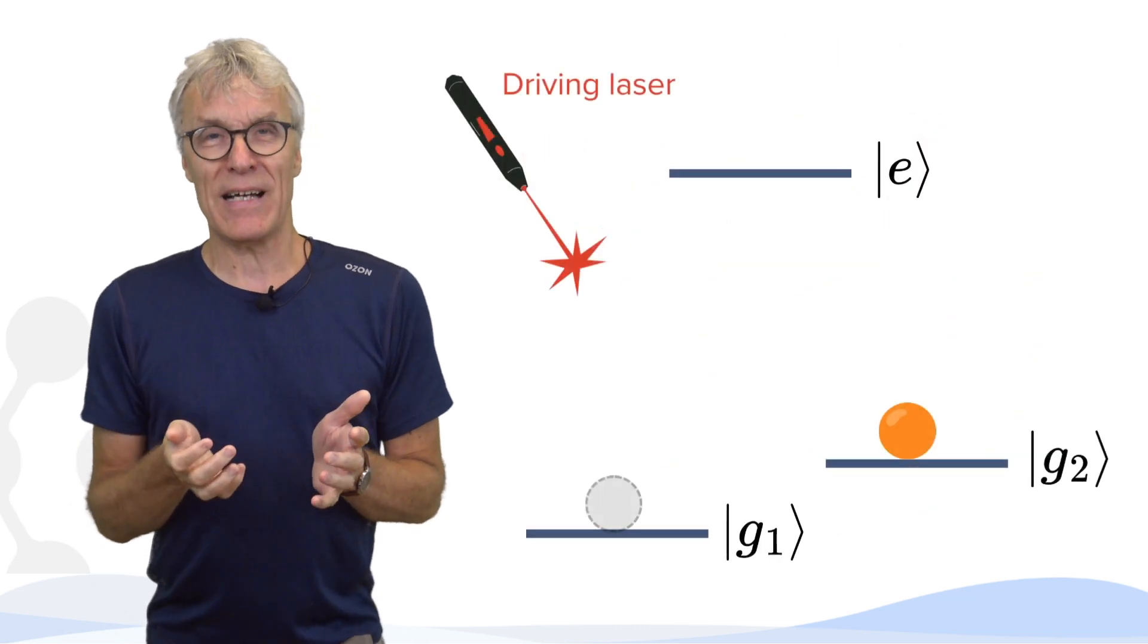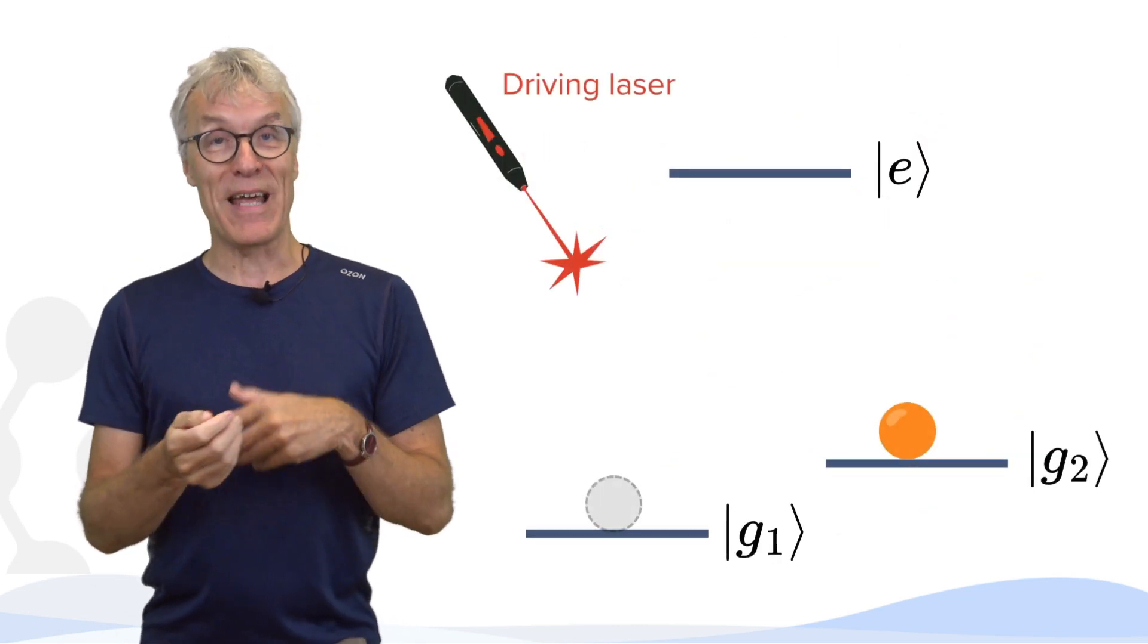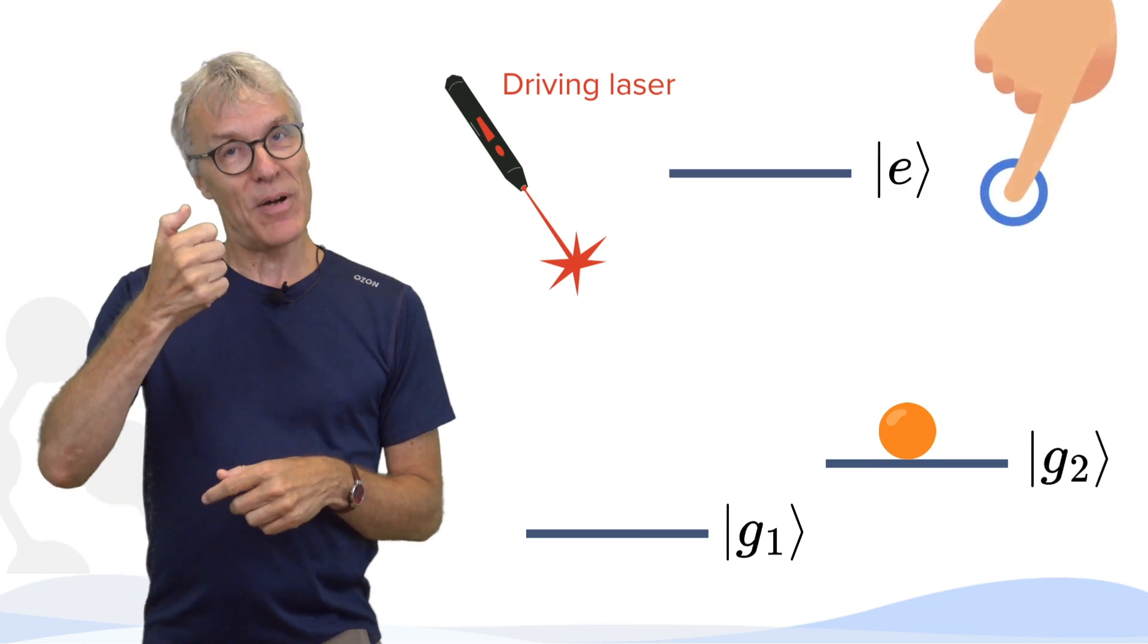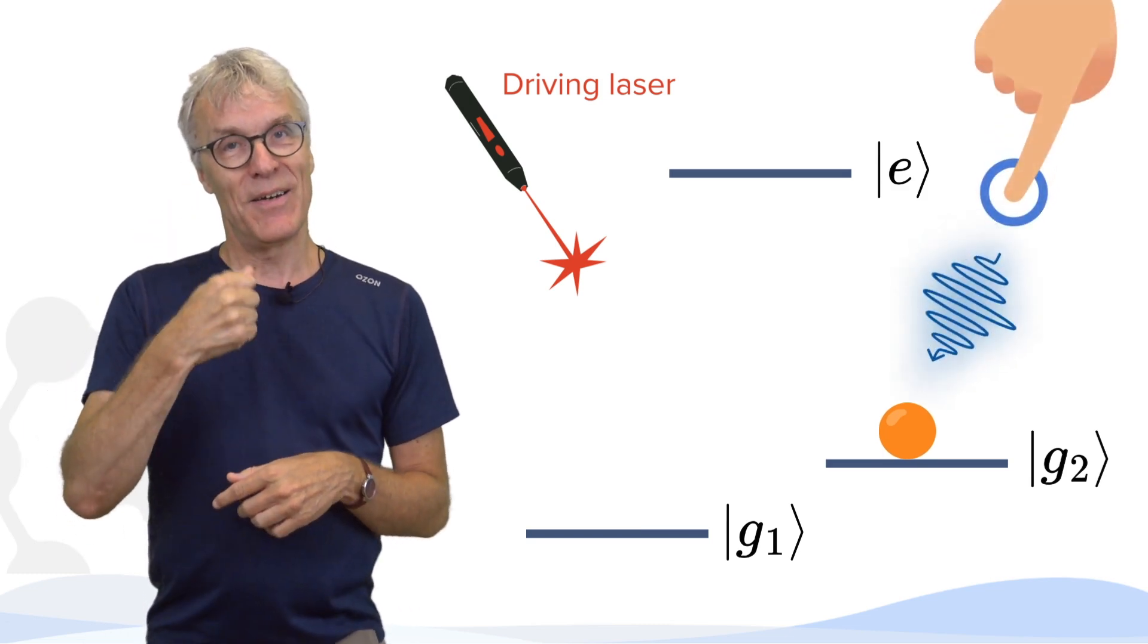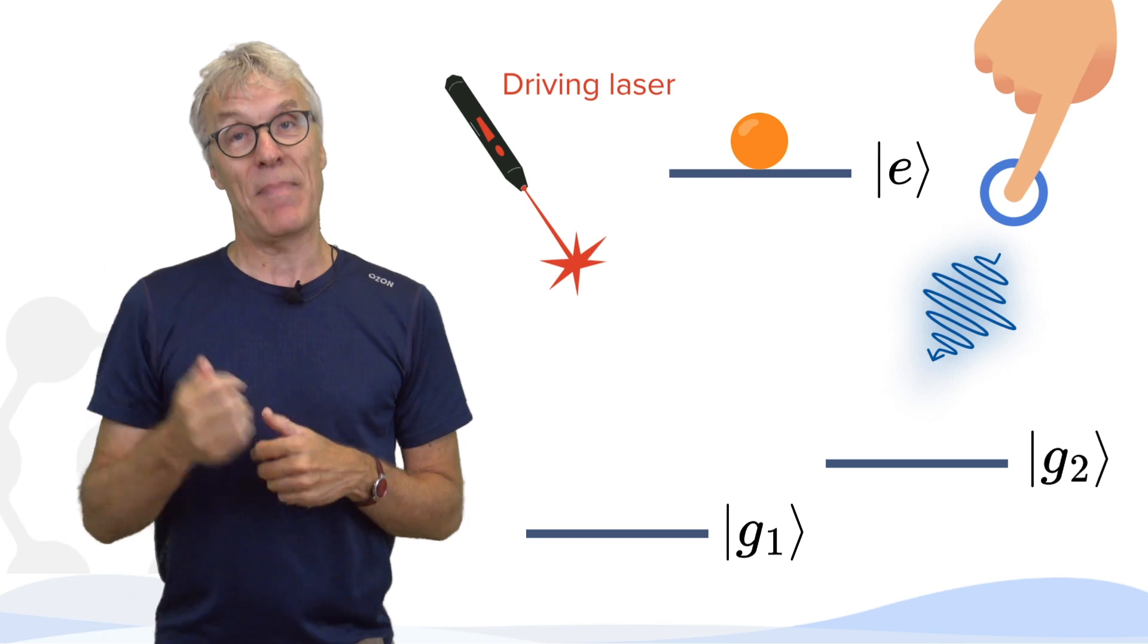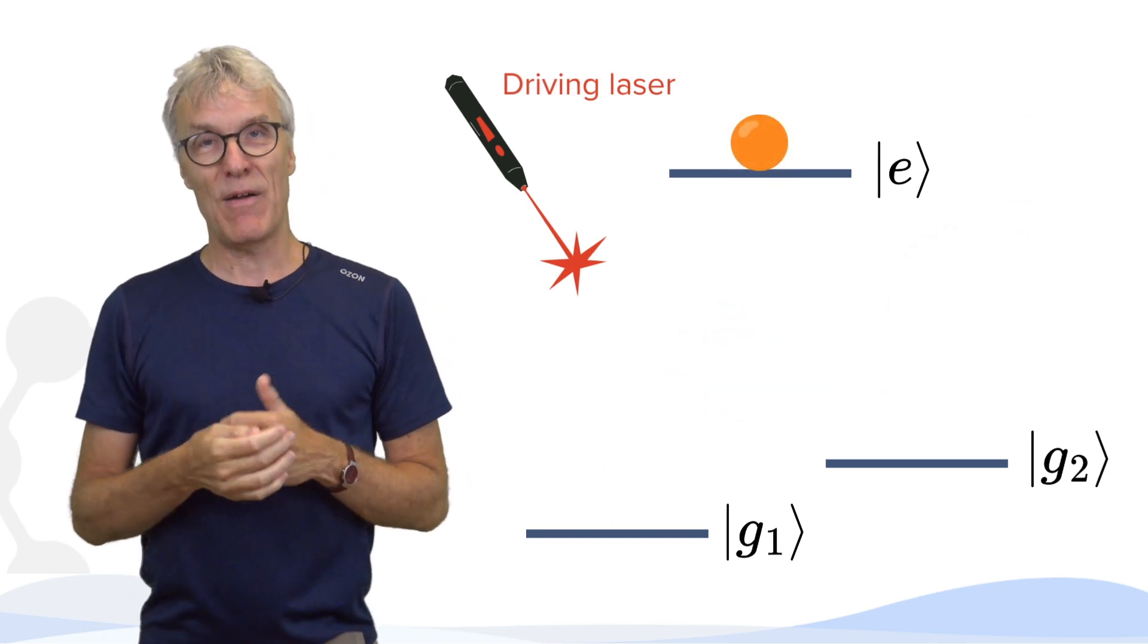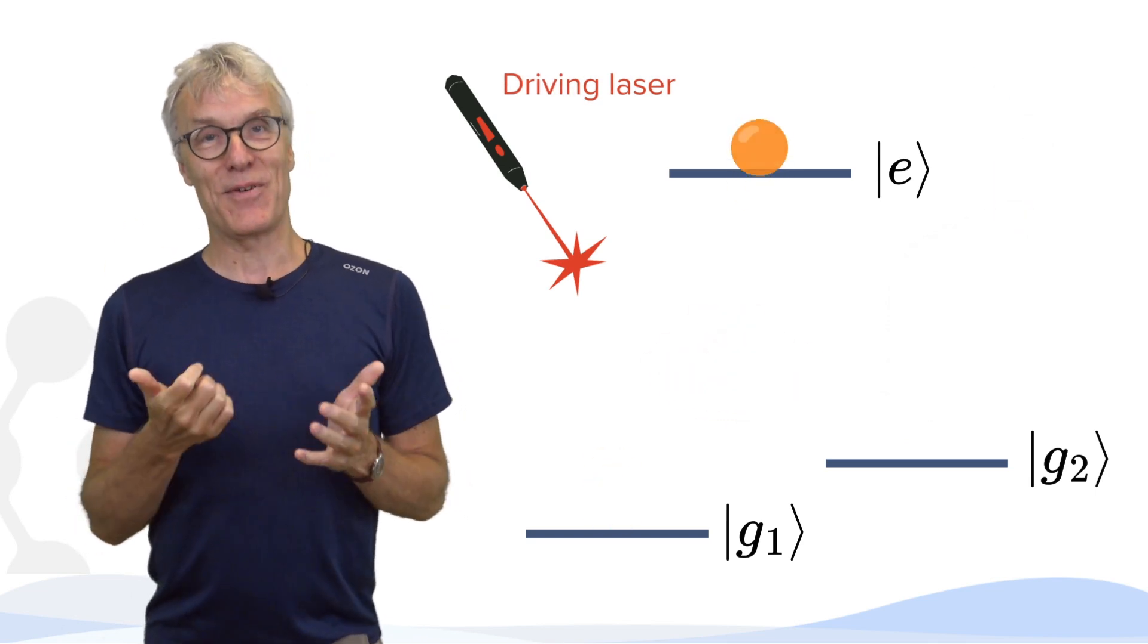And sometimes it got really dark. And that's because this atom found another state. And then I had a little button, so I could put a little squeeze of light onto the atom and re-excited so it came back again and started shining.